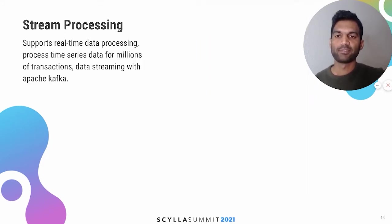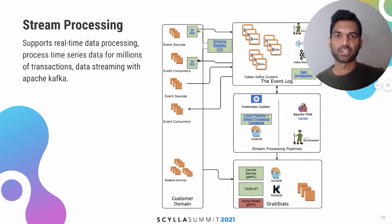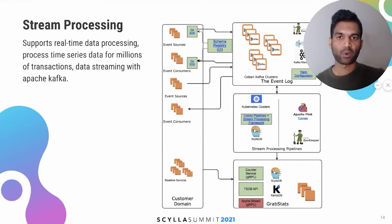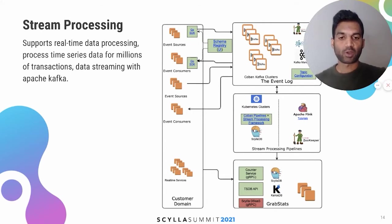Stream processing is a framework built on an event sourcing architectural pattern that supports real-time data processing and processes time series data for millions of transactions. It also does data streaming with Apache Kafka. We use ScyllaDB here as persistent storage to process stateful transformations like aggregations, joins, and windowing. There are hundreds of pipelines that can process both stateful and stateless transformations depending on customer needs. This platform is currently built to scale and service billions of events per day. Real-time services use our graph stat service to interact with ScyllaDB, and fraud detection makes gRPC calls to graph stats to interact with the database.